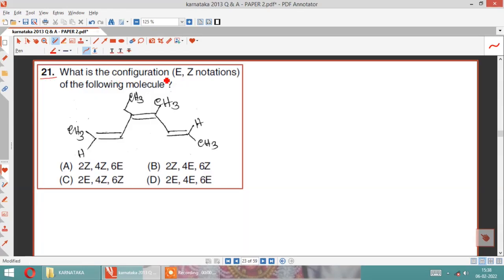What is the configuration E,Z notation for the following molecule? The molecule has been given. Here we will number 1, 2, 3, 4, 5, 6.